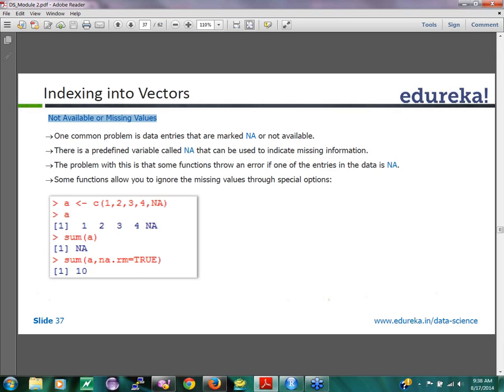So in this case, I am creating a vector which says 1, 2, 3, 4 and I am using the value NA. NA stands for not available or missing. You don't use quotes for NA. We use quotes and it becomes a string. So I am assigning to a variable called A. I am printing a variable here.